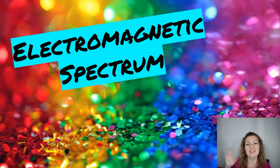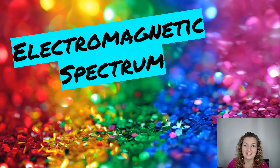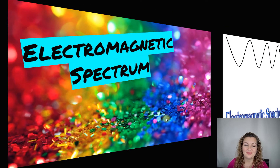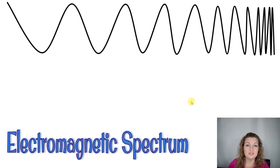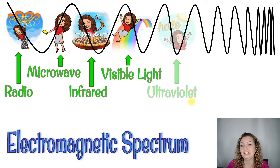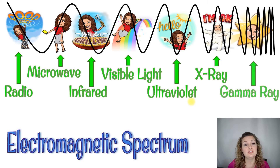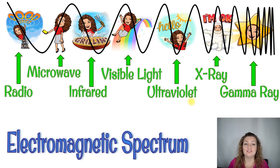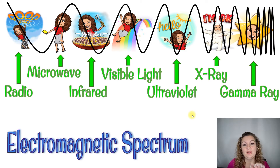Hey everybody, Mrs. Bodishan here. Today we're going to be talking about the electromagnetic spectrum. The electromagnetic spectrum is just a wave — in fact, it's a transverse wave. There are all different parts to it because every piece is going to have a different wavelength, and that represents a different part of this wave that's something completely different. We're going to go into detail and talk about each little part of the wave so you can understand it fully.